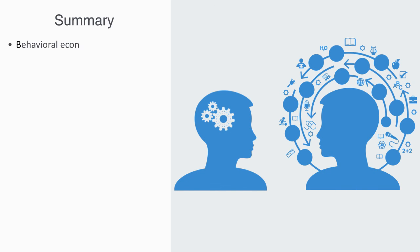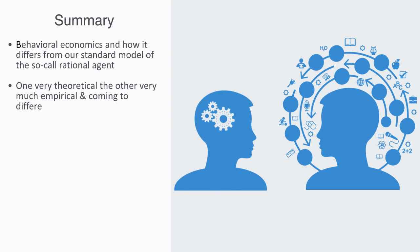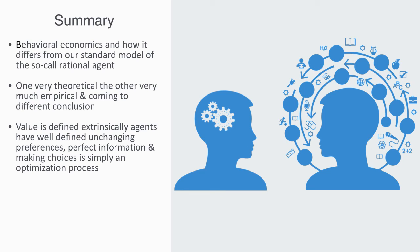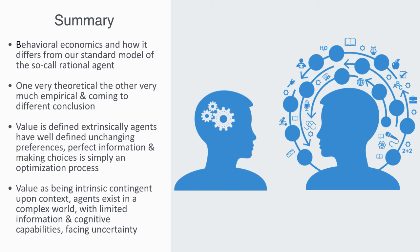In this module, we've been giving a short overview of behavioral economics, and how it differs from our standard model of the so-called rational agent. We mentioned how they represent two approaches, one very theoretical, the other very empirical. With both coming to very different conclusions about how agents value things and make choices. Within the rational model, value is defined extrinsically in terms of utility. Agents have well-defined unchanging preferences, perfect information, and making choices is then simply an optimization process. Behavioral economics sees value as being more intrinsic as it is contingent upon the context. Agents exist in a complex world, always embedded within space and time, with limited information and cognitive capabilities, often facing radical uncertainty. And in the face of this, their choices are more a product of how they are contextualized and framed, both physically, socially, and culturally, as they imitate others, use heuristic shortcuts, or create narratives to aid them in their decision-making process.